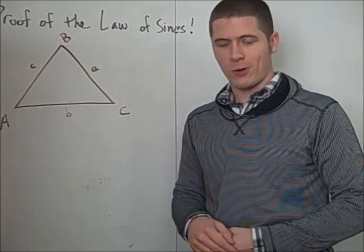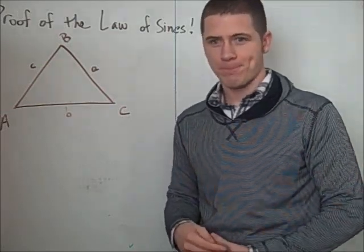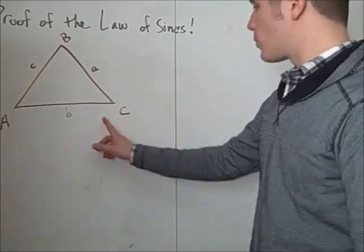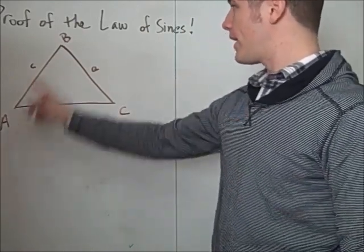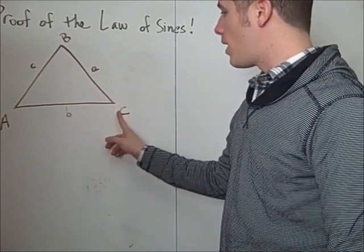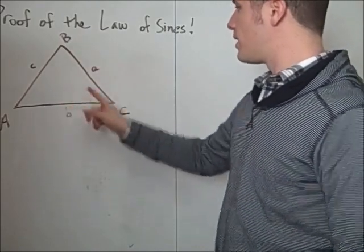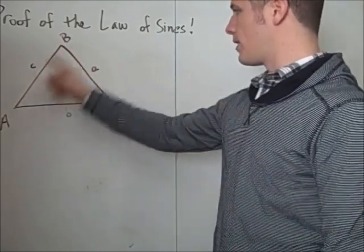Here will be a pretty straightforward proof for the law of sines. And the law of sines helps us solve oblique triangles. So let's say we have an oblique triangle ABC with angles A, B, C and sides little a, little b, and little c.